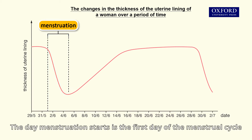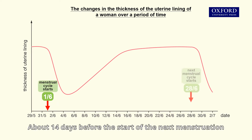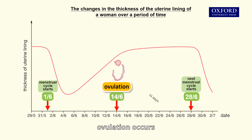The day menstruation starts is the first day of the menstrual cycle. About 14 days before the start of the next menstruation, ovulation occurs.